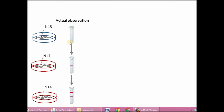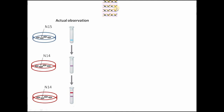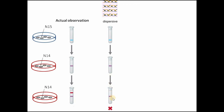In Meselson and Stahl's experiment, the actual observations were: a heavy band in the first step, an intermediate band after first generation in N-14, and then an intermediate band plus a lighter band in the third generation. If the dispersive theory were correct, you would only ever see intermediate bands in the second and third generations — but the actual observation showed an intermediate band and a lighter band. Therefore, the dispersive method was rejected.